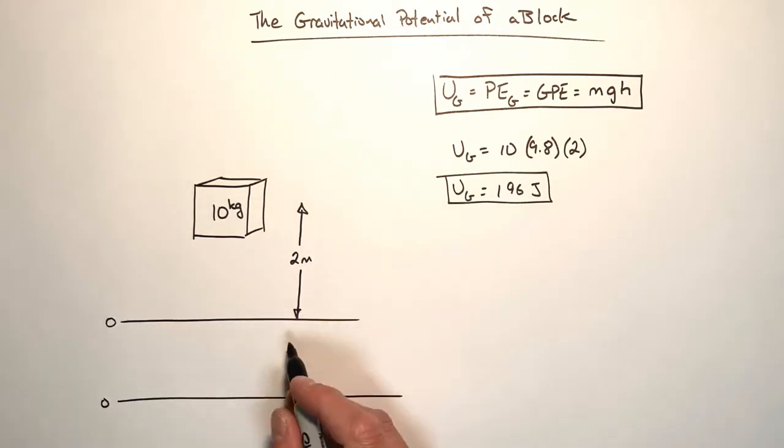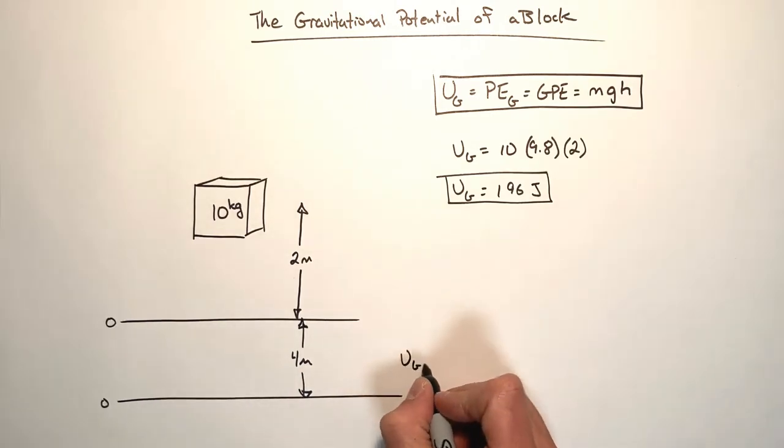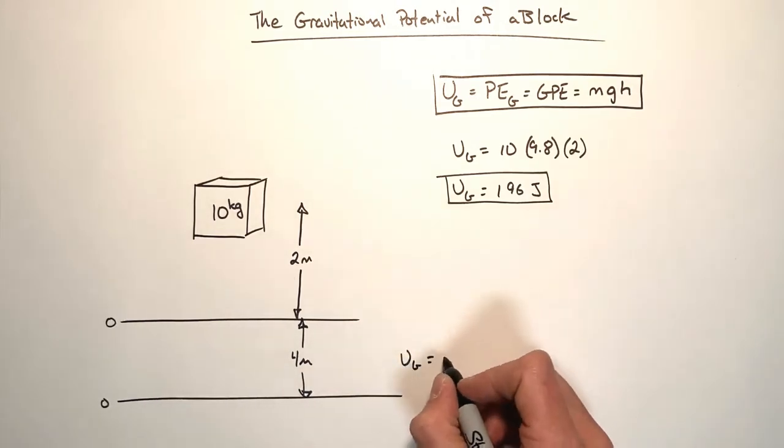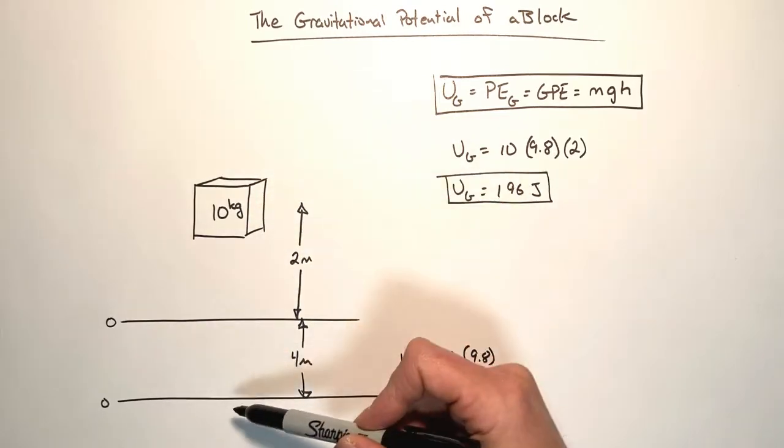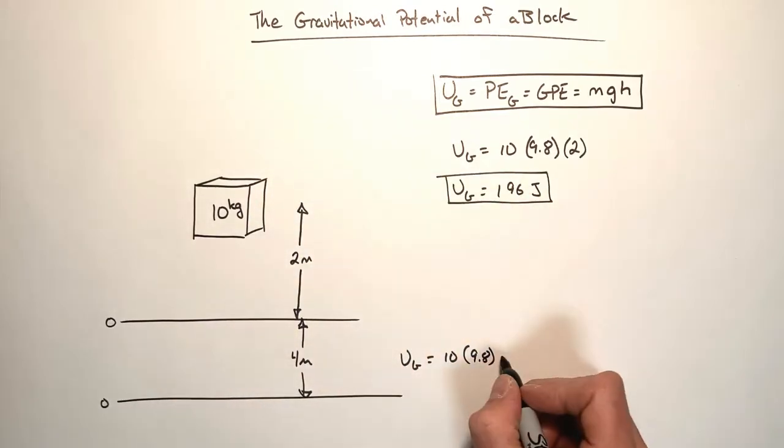And so this is not to scale. Let's say this is four meters between this floor and where I'm actually going to say a height of zero is located. Well, that would change the actual potential energy because in this case right here, we would see that the gravitational potential energy is equal to the mass that's 10 times the g that's 9.8 times the height that is the difference in height between the block and where we're saying is a height of zero.